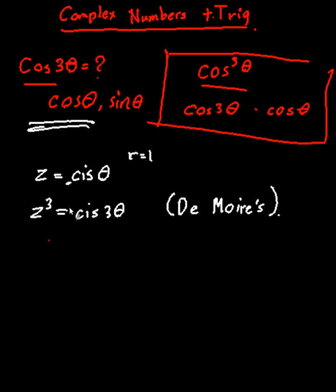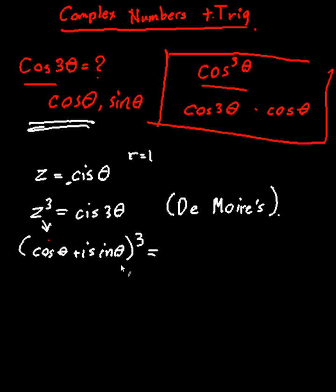What you can also do is: you know z is equal to cos θ plus i sin θ. If you cube this, instead of using De Moivre's theorem, you can expand it out. I'm going to write c for cos and s for sin. Expanding this out, the first term is c to the power of 3. The second term is 3c² times is — bringing i to the front.